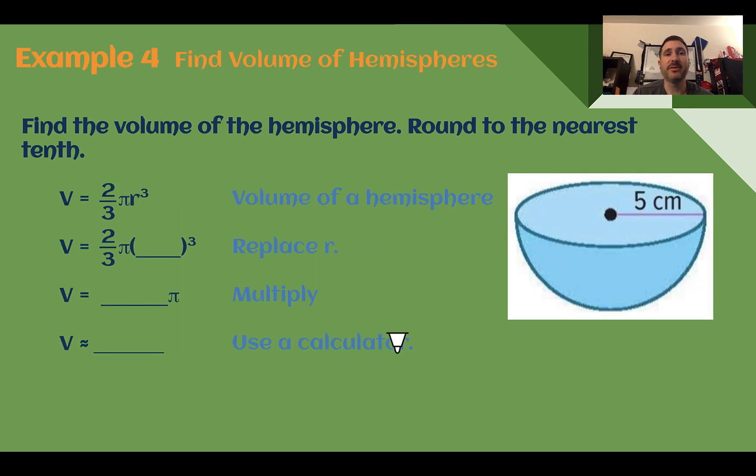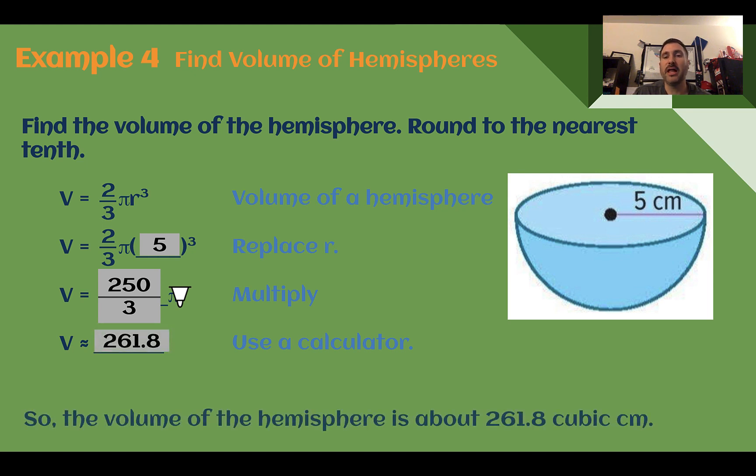Example 4, find the volume of hemispheres. Find the volume of the hemisphere, round to the nearest tenth. So here we're going to use the formula they gave us: V equals 2 thirds pi r cubed. Our radius is 5, so let's plug that in. 2 thirds times 5 cubed ends up being 250 over 3. Multiplying that by pi using a calculator, 261.8. So the volume of this hemisphere would be about 261.8 cubic centimeters.